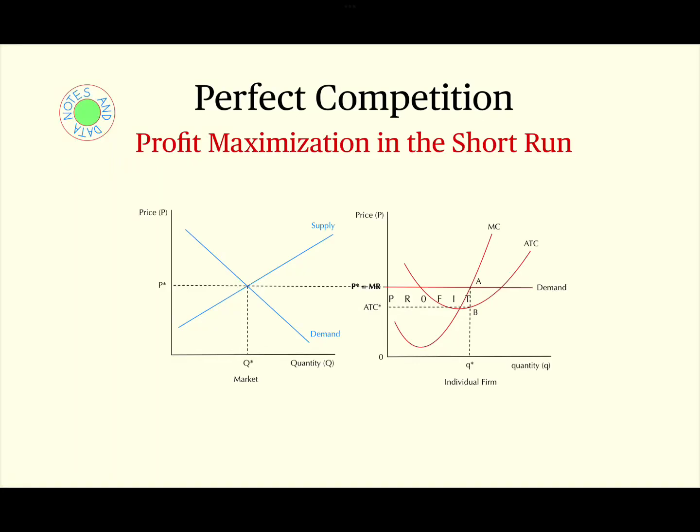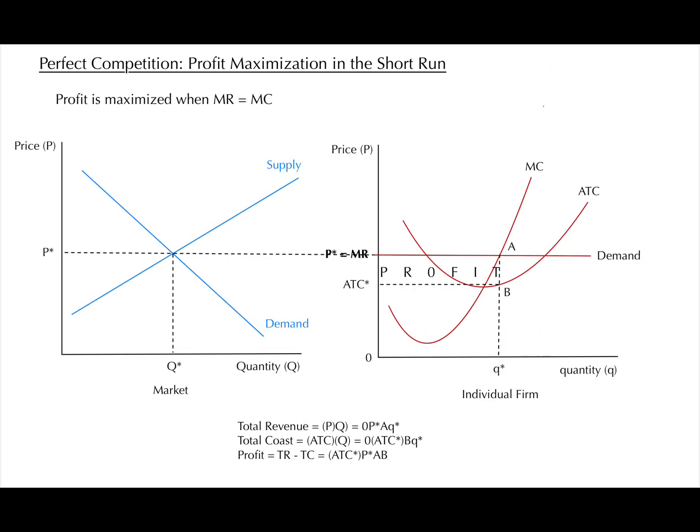Today, we're going to learn about profit maximization in the short run for perfect competition. It is generally stated that profit is maximized when marginal revenue, MR, equals marginal cost, MC. Marginal revenue is the added revenue that is gained when one additional unit of a product is sold. Marginal cost is the additional cost that is incurred when one additional unit is produced.